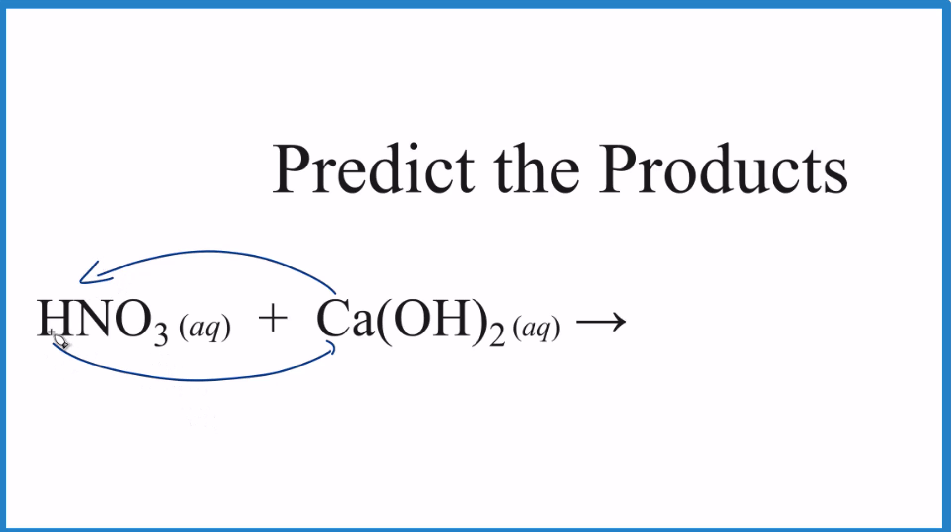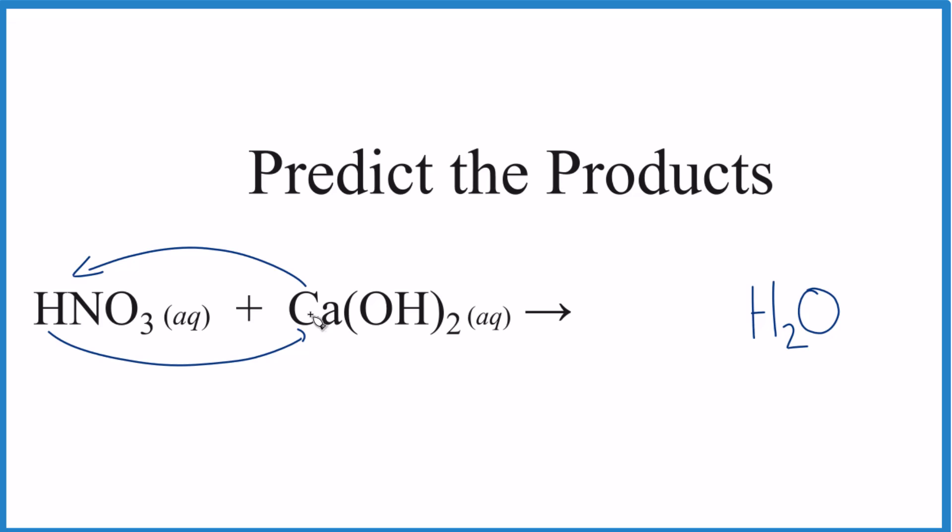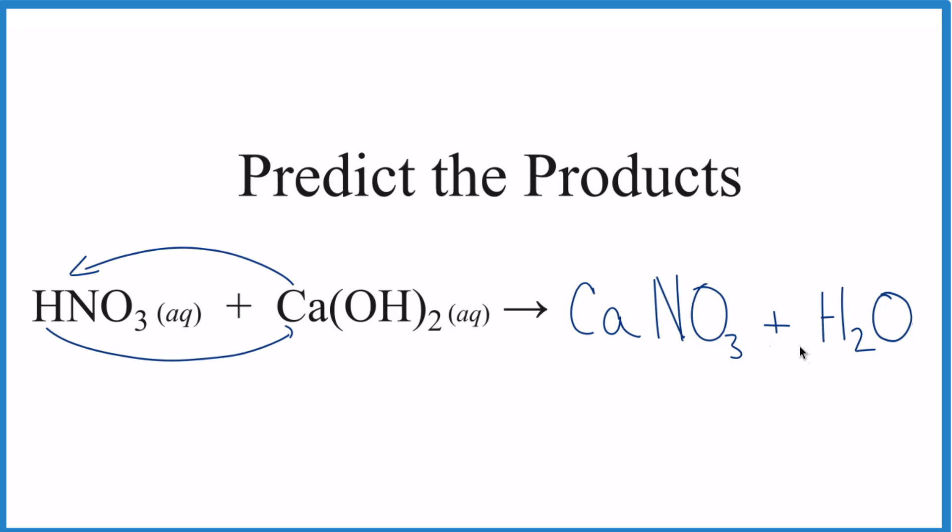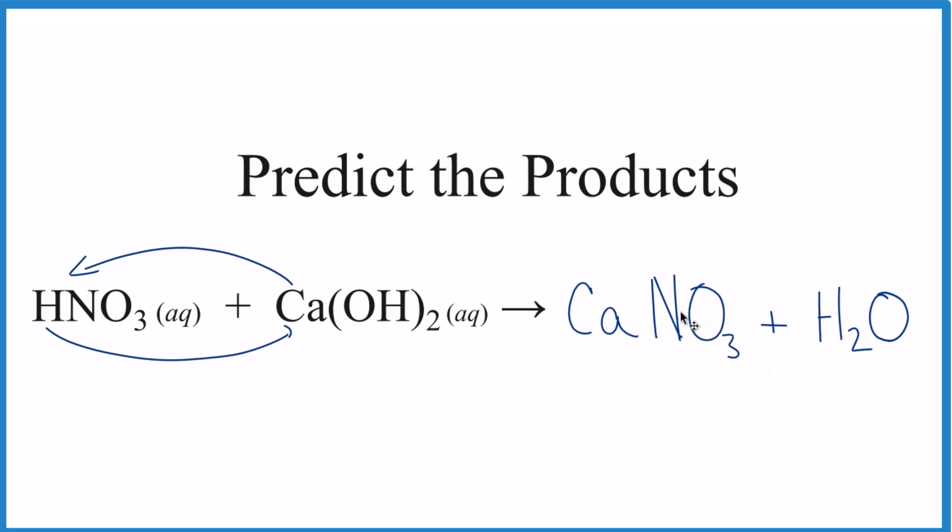So the H goes with the OH and you get HOH, you might know that as H2O. Then the calcium and the nitrate go together. Always write the metal first, and these are the products.